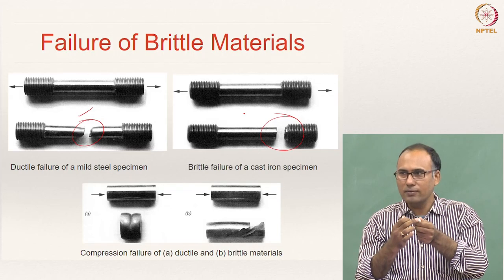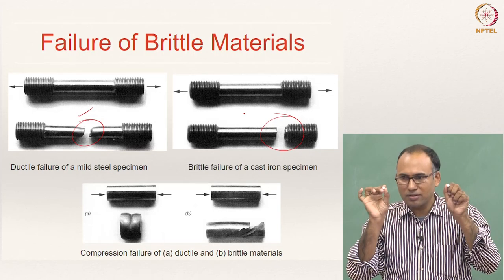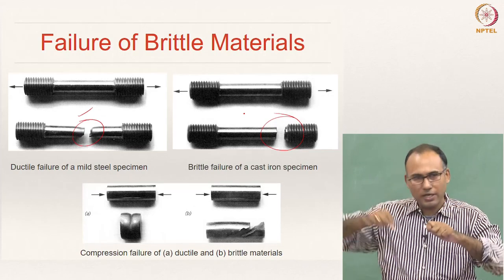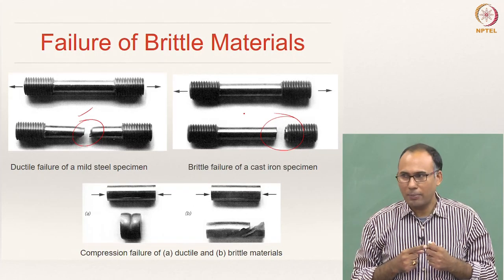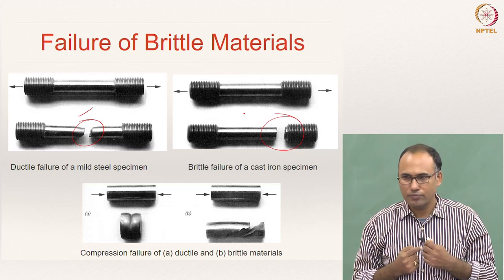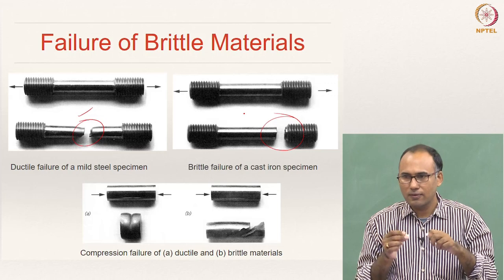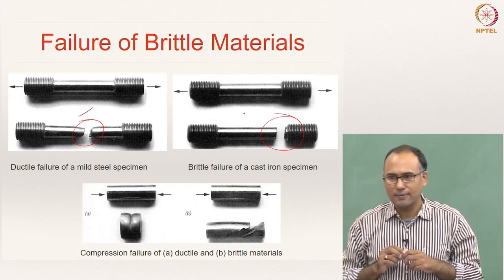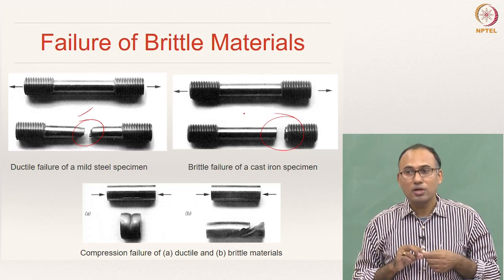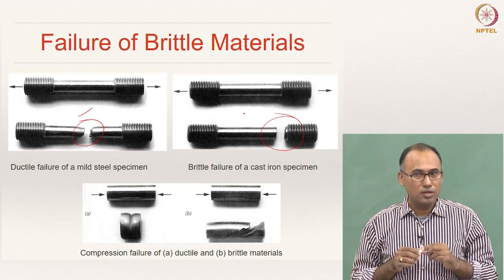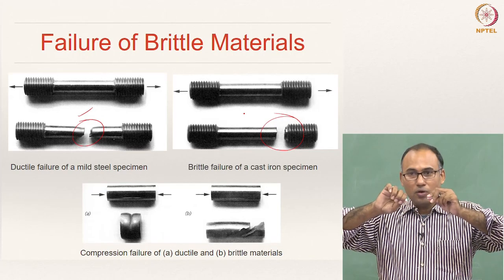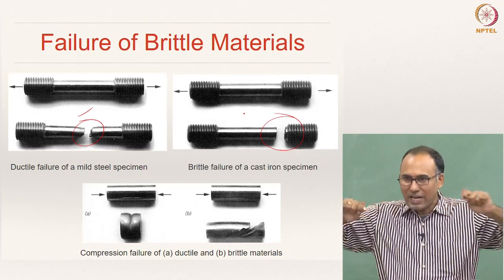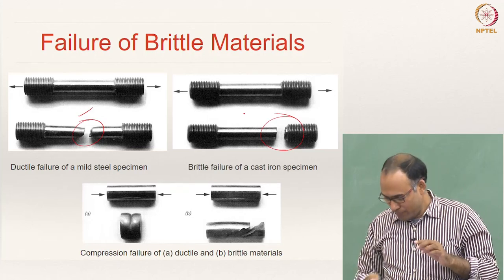Why is a brittle material failing that way? The ductile material fails at an angle of 45 degrees — that we have seen in mild steel testing done in the applied mechanics lab. So why does it do this? What is the failure mechanism of brittle materials? Do they fail due to shear or due to normal strength? They fail due to normal strength — they fail by fracture. When you are applying this load, the plane on which you have maximum normal stress is the plane in which you are applying the load, and hence it has to fail that way.